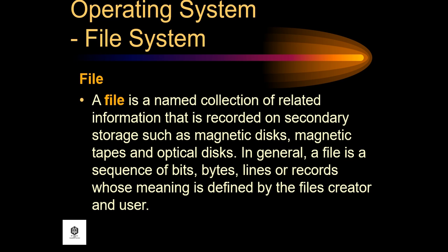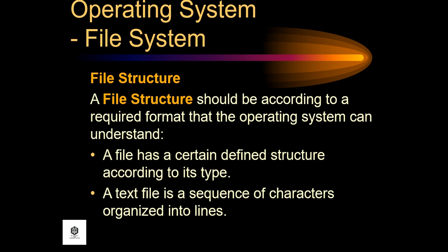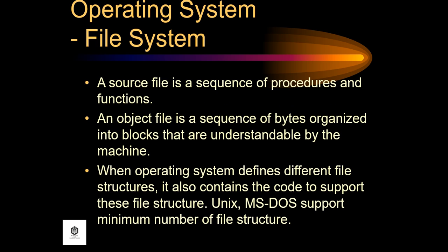A file's meaning is defined by the file's creator and user. A file structure should be according to a required format that the operating system can understand. According to its type: a text file is a sequence of characters organized into lines, a source file is a sequence of procedures and functions, and an executable file is a sequence of bytes organized into blocks understandable by the machine.